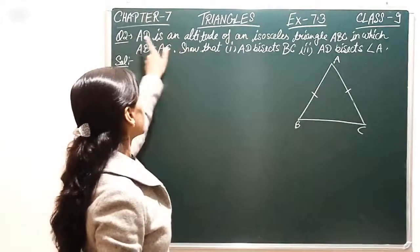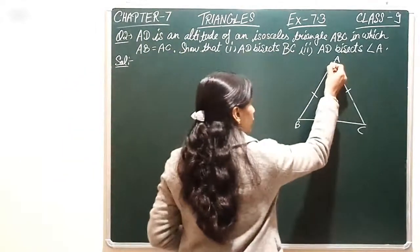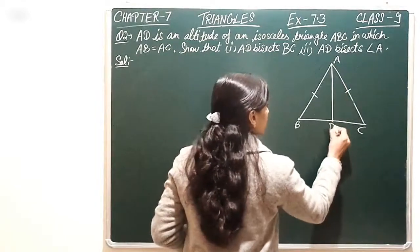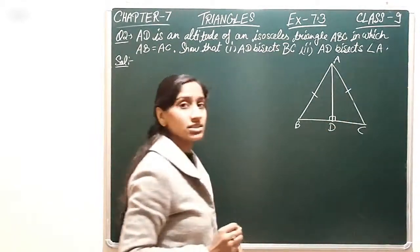Here we have an altitude AD drawn. So we have an altitude drawn here. This is AD, that means these are 90 degree angles created.